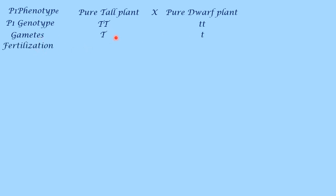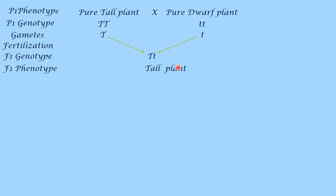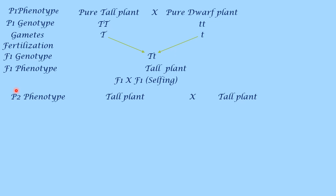During fertilization, male gamete unites with female gamete to form zygote. So the zygote formed is of capital T, small t type — it represents F1 genotype. F1 is first filial generation and their phenotype is tall plant. This tall plant is crossed with itself in the next step, which is called F1 selfing. This tall plant will become P2, the second parental generation.